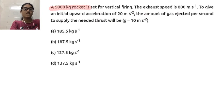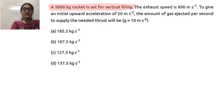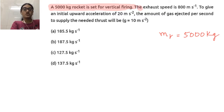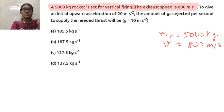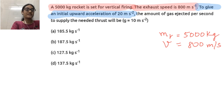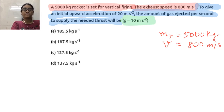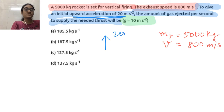The problem says a 5000 kg rocket is set for vertical firing. Mass of the rocket is 5000 kg. The exhaust speed is 800 meter per second. The question asks: to give an initial upward acceleration of 20 meter per second square, the amount of gas ejected per second to supply the needed thrust will be what? G is taken as 10 meter per second square.